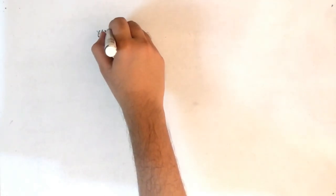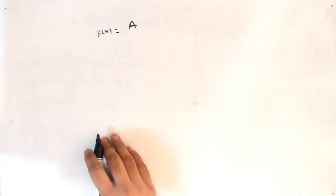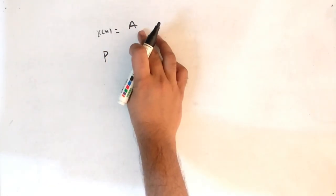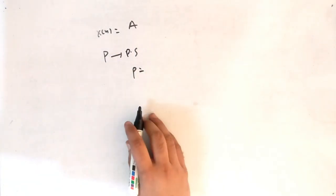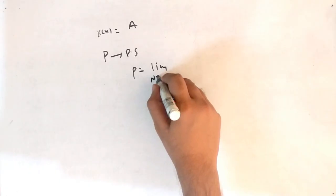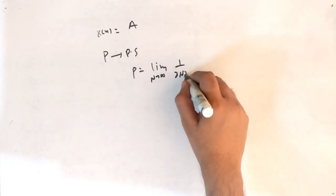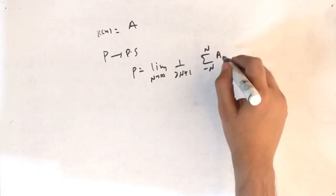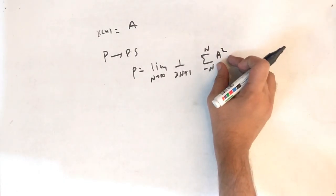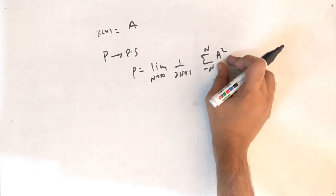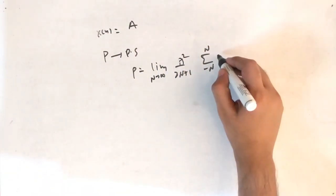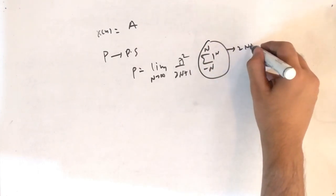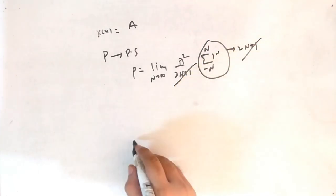Now if x(n) = a (constant amplitude only), this is periodic and therefore a power signal. Power = lim(N→∞) of (1/(2N+1)) × summation from −N to N of a². Taking a² out as a constant, summation of 1^n = 2N+1. The (2N+1) cancels, giving power = a².